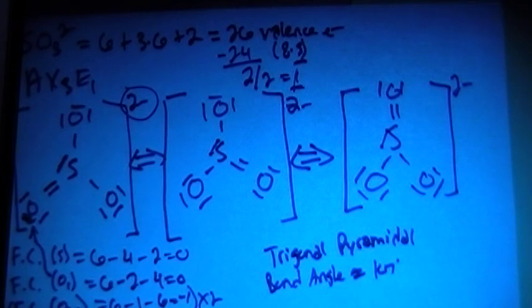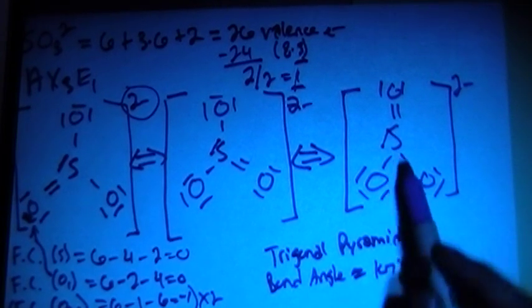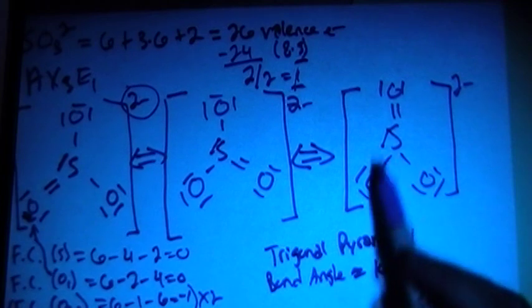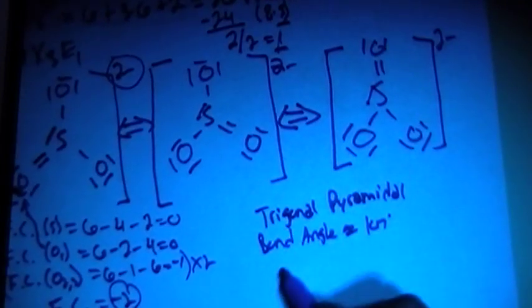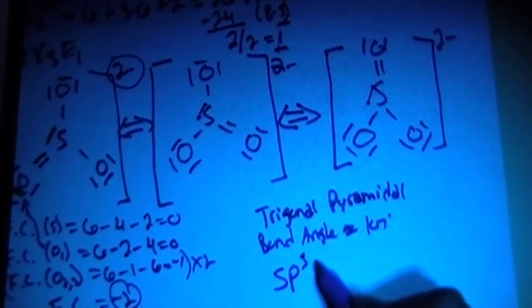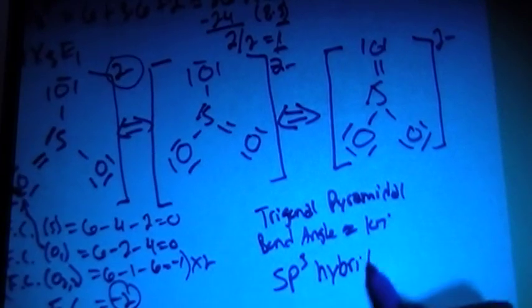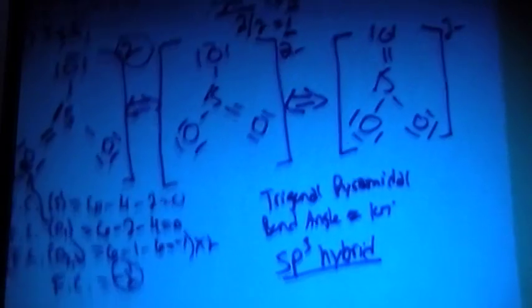And now we can talk about the hybridization. Sulfur in the center has one, two, three, four bonding sites, so it's going to be an SP3 hybridized molecule.